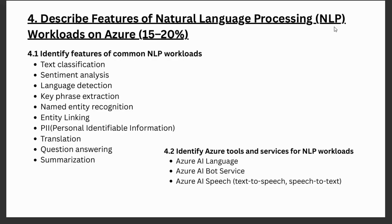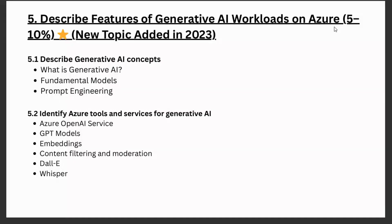The last module is Describe Features of Generative AI Workloads on Azure. This is a newly added topic in the exam. We will learn generative AI concepts such as what generative AI is, what foundation models are, prompt engineering, and fine-tuning. We will also see the Azure tools and services for generative AI, including Azure OpenAI Service, GPT models, embeddings, content filtering and moderation, DALL-E, and Whisper.